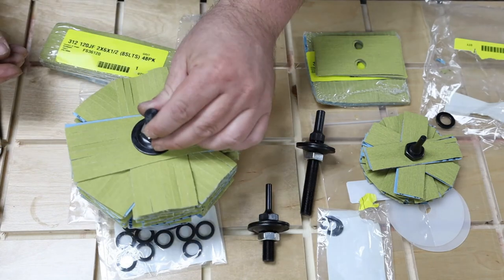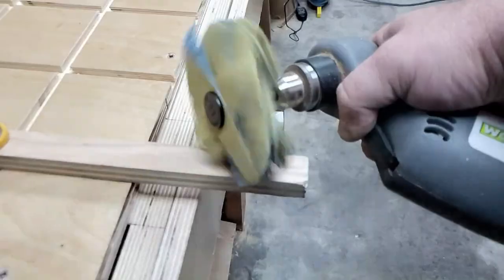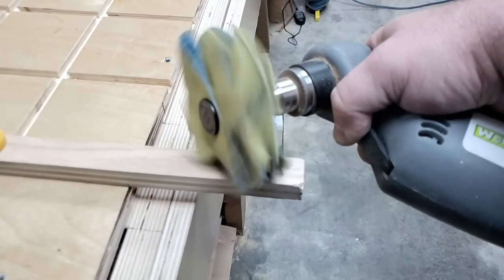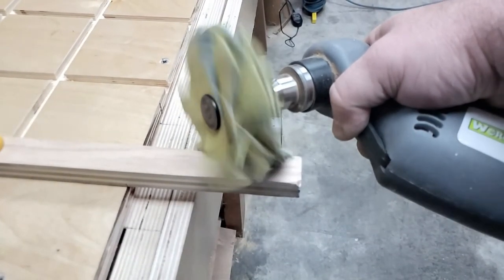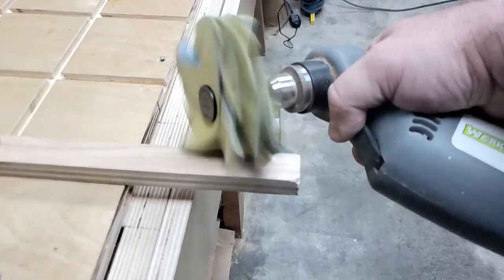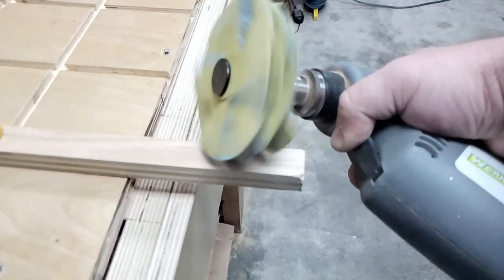Now because this is a new mop you want to take some time to break those factory edges. So grab some scrap wood and just have some fun. Be aggressive and get all those little perforations loose and get those fingers fluffy. You want to go from looking sharp and crisp to looking like this.